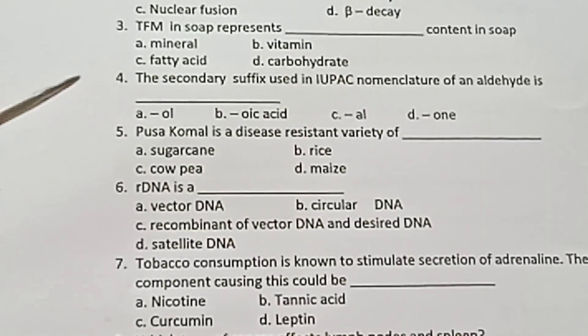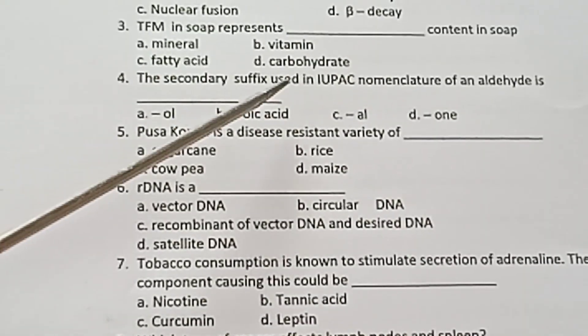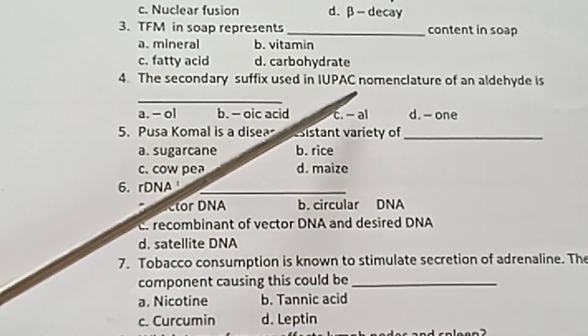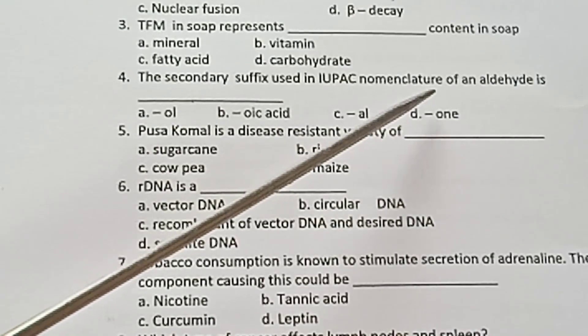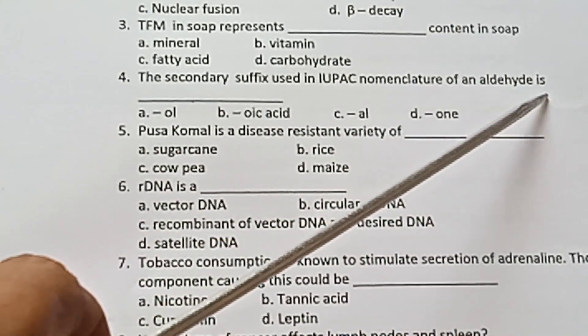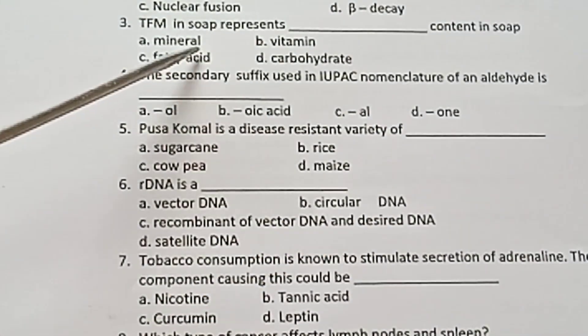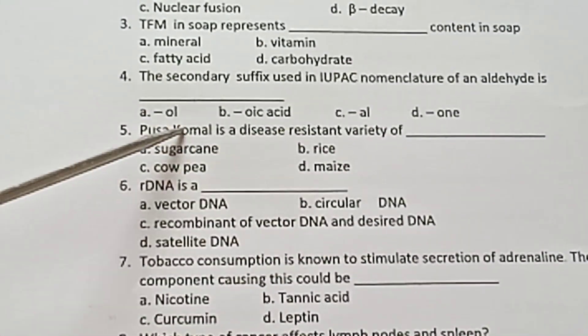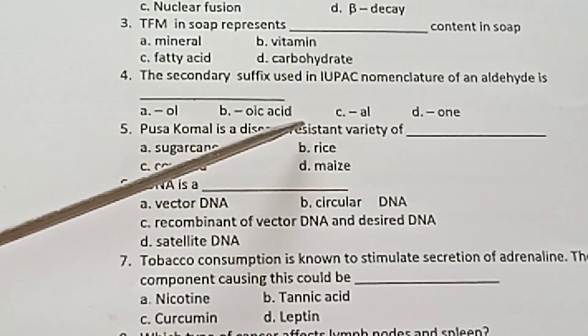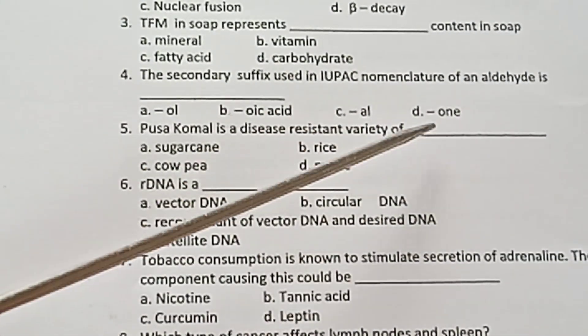Question 4: The secondary suffix used in IUPAC nomenclature of an aldehyde is — A) Ol, B) Oic Acid, C) Al, D) Ol.